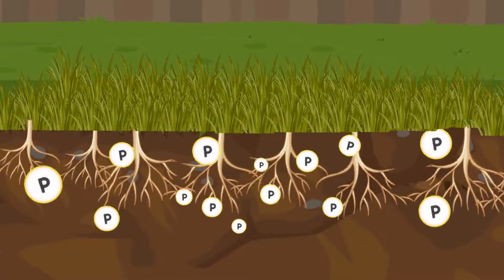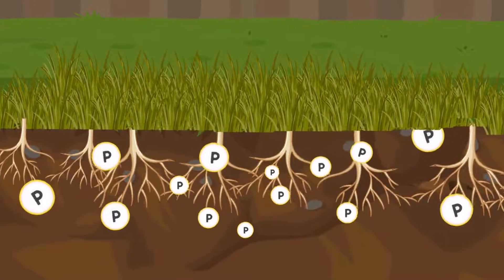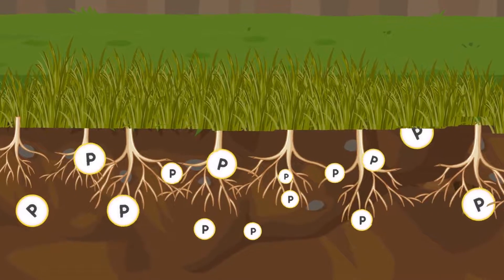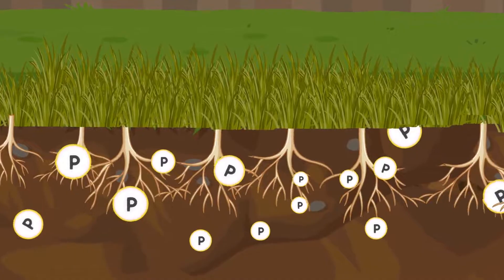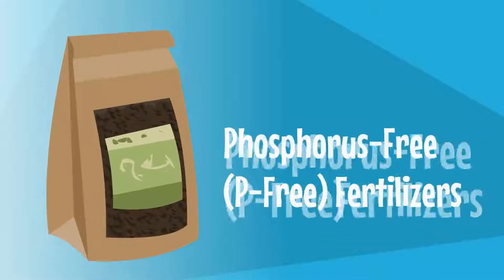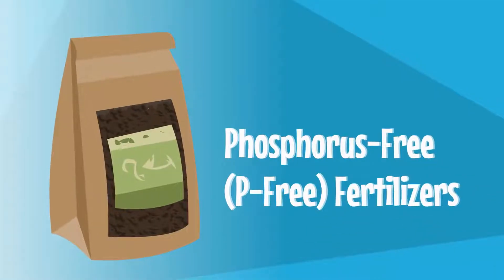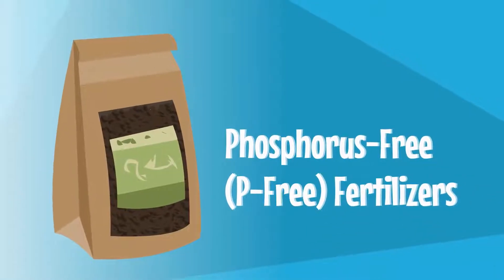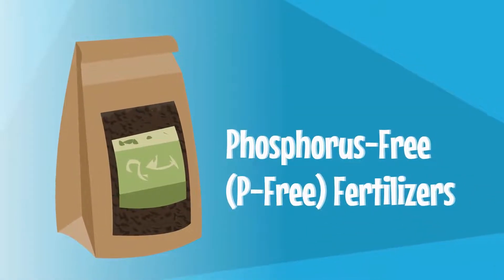Most soils in Iowa already have enough phosphorus. Use phosphorus-free, potassium-free fertilizers on established lawns.